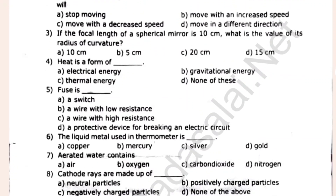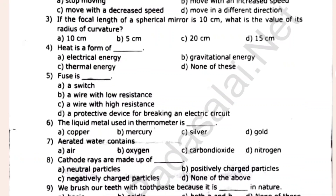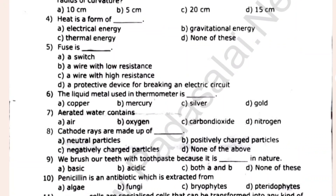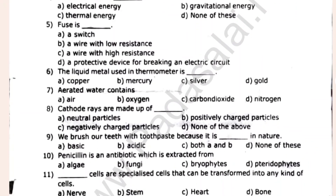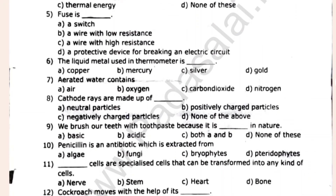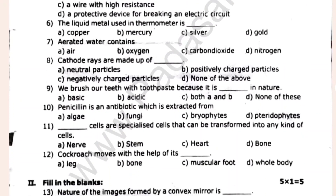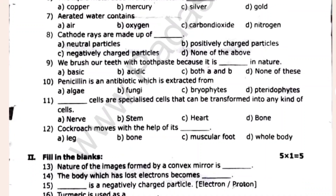Heat is a form of energy. Fuse is made of liquid metal. Let's see here: the numbers are 7, 9, 10, 11.